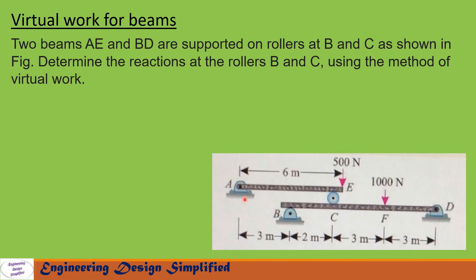In this problem, beam AE is supported by a roller at point C. The distance between A and C is 3 plus 2, that is 5 meters, and the total length of beam AE is 6 meters. A load of 500 N is acting at point E vertically downwards. There is another beam BCFD which is hinged at D, supported by a roller at B, and roller at C is also present. The lengths are given, and a load of 1000 N is acting at point F vertically downwards. Beam AE is also hinged at A. We need to find reactions at B and C using the method of virtual work.